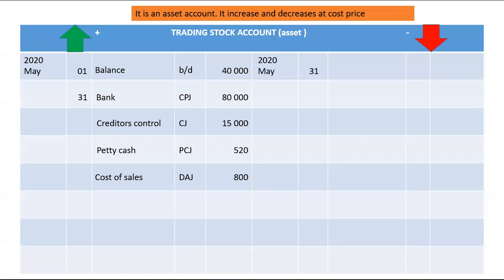Trading stock decreases when you sell it. Whether you sell for cash or on credit, you will debit cost of sales and credit trading stock. For cash sales, the cost of sales figure comes from the Cash Receipts Journal (CRJ). For credit sales, you still debit cost of sales at cost price and credit trading stock. The reason we debit cost of sales is to apply the matching principle, which requires us to recognize an expense that relates to income that has been earned.